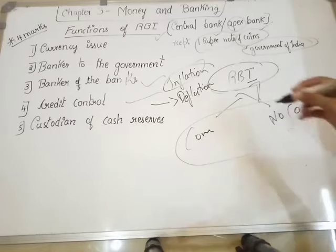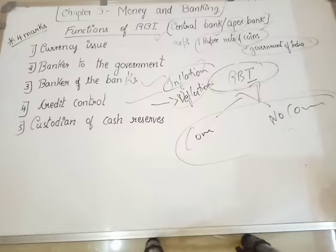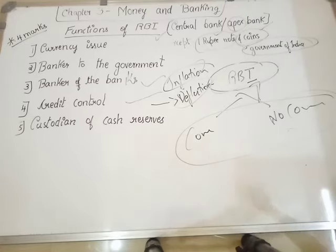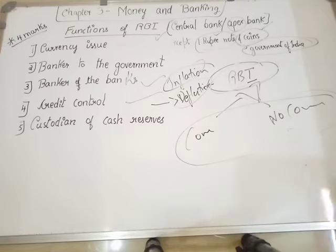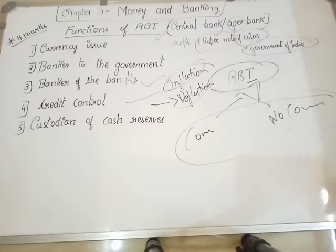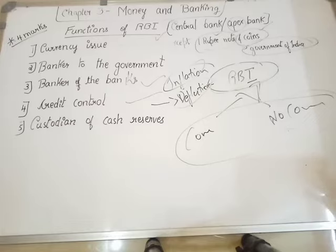During deflation, there is less money supply in the economy. In that case, RBI can direct commercial banks to reduce the interest rate on loans. When interest rates are lower, people come forward to apply for loans, which increases money circulation in the economy. This is how RBI plays a role in controlling credit in the economy.